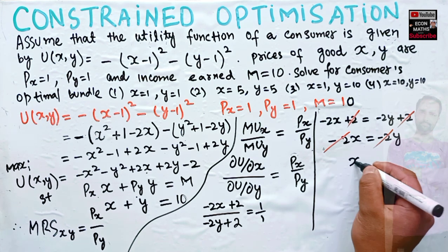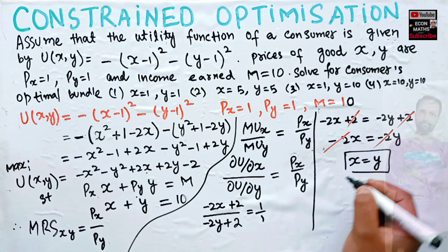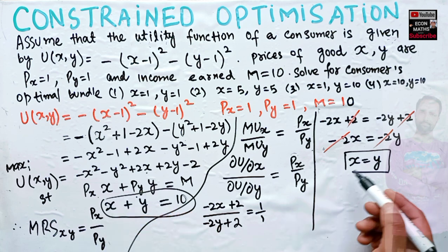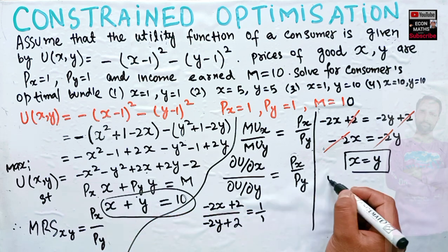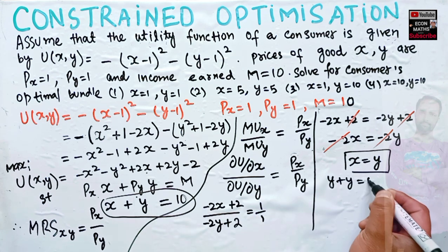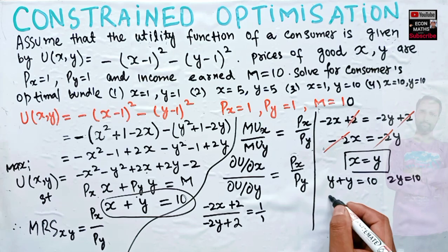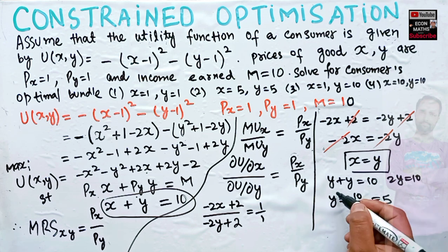Cancelling minus 2 from both sides gives us x = y. Now plug x = y into the budget constraint x + y = 10. If x = y, then y + y = 10, which gives 2y = 10, so the optimal value of y = 5.